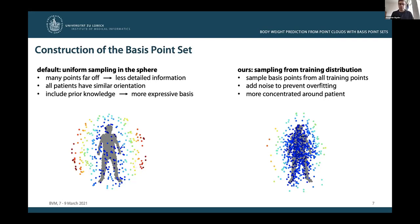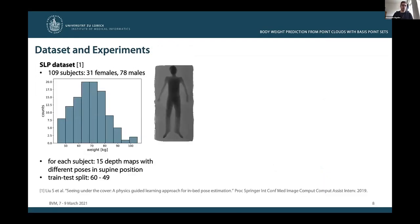These were the main components of our proposed method. Let's go on with the evaluation. We conducted all experiments on the SLP dataset which comprises 109 subjects. For each of the 109 subjects, there are 15 depth maps which show the patient lying in bed in supine position while taking 15 different poses. We trained our method on 60 out of the 109 subjects and report results for the remaining 49 subjects.